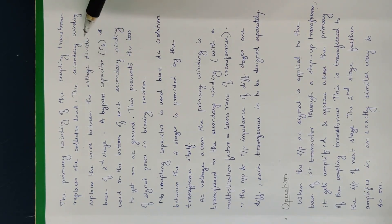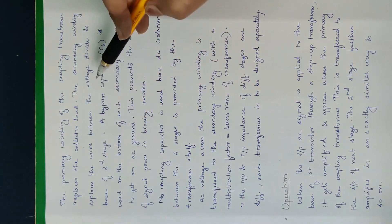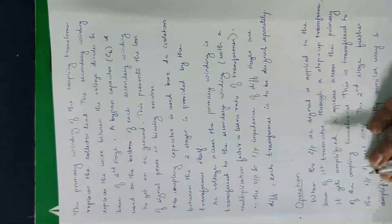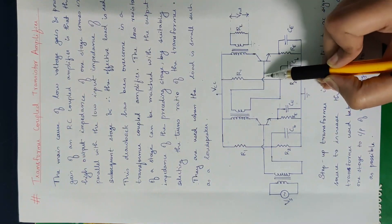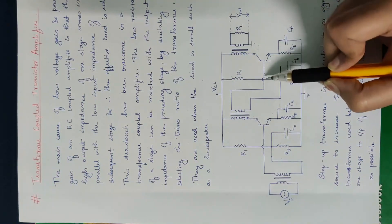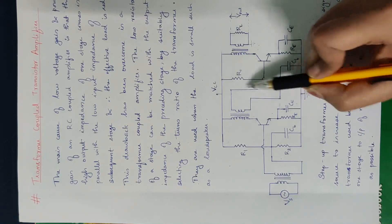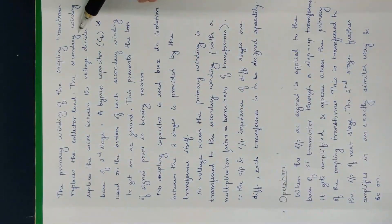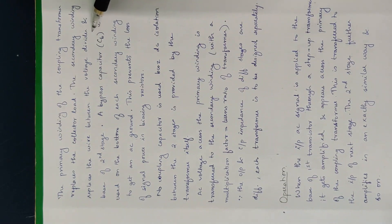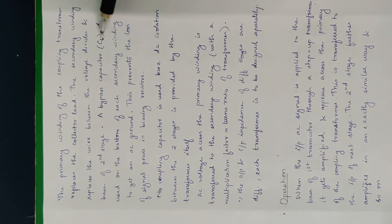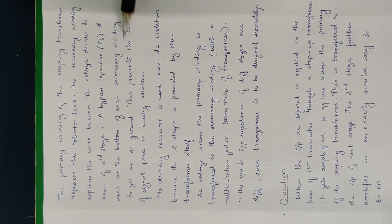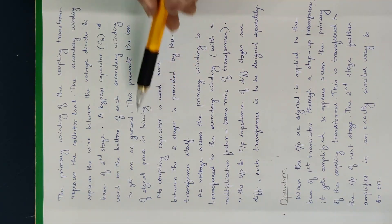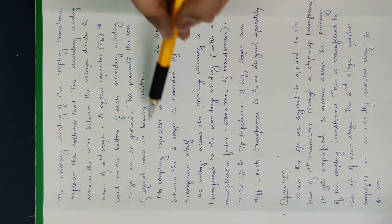The secondary winding replaces the wire between the voltage divider bias and the base of the second stage. We use a bypass capacitor CB on the bottom of each secondary winding to get an AC ground.